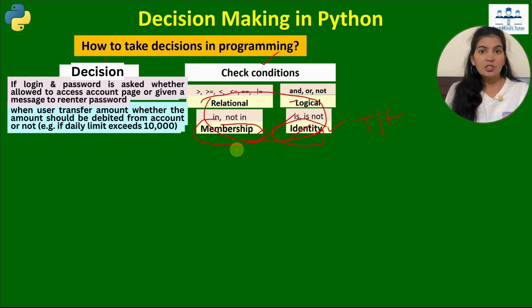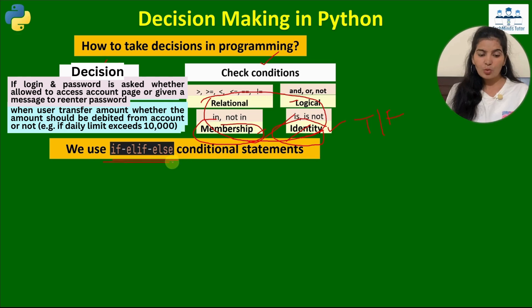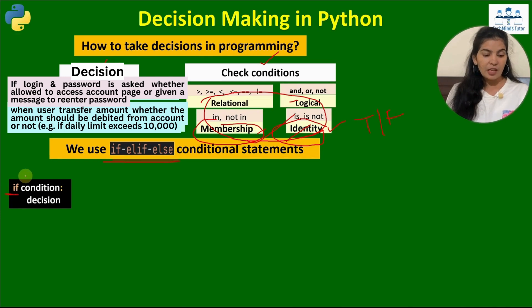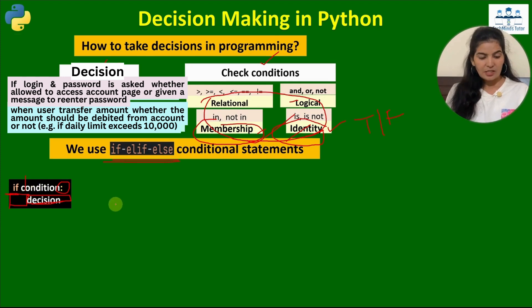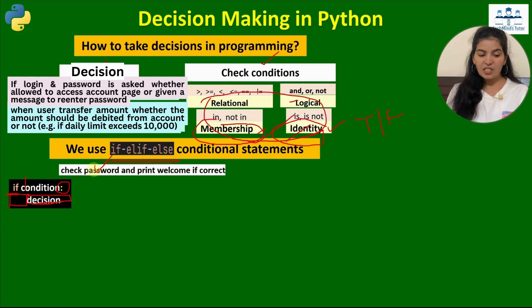We take decisions through if-elif-else conditional statements. Let's see the syntax. First we use the if keyword, then we mention the condition — for example, whether the password equals the specified password. Then we use the colon symbol, which is compulsory. After the colon, on the next line, we must give some space — this space is mandatory — and then write the statement for the decision when this condition is true.